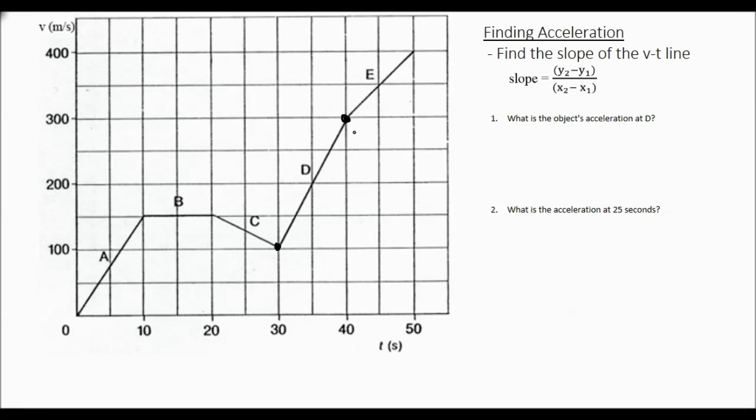And in order to find slope, we should know the coordinates of these two points. In this case, it is 30 comma 100 and 40 comma 300.